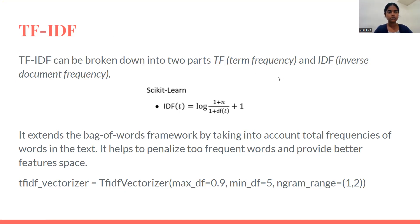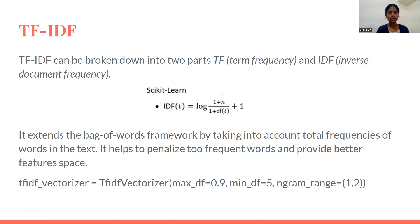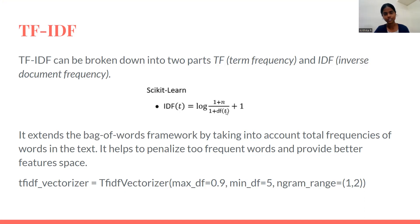Now let us move on with IDF, which is inverse document frequency. Basically, it tells how uncommon or how common a word is in a document. The formula is log of (1 + N) divided by (1 + df(t)), where t represents the term we are checking and N is the number of documents. The denominator is added with 1 because df(t) can also become 0 — the particular term we are searching for may not be present in the whole document — so in order to avoid a divide-by-zero error, we add 1 to the denominator.